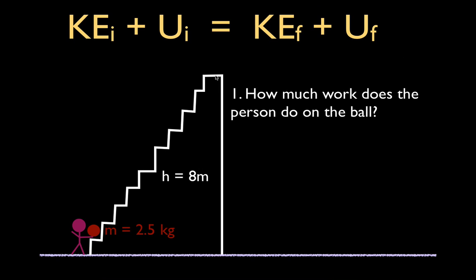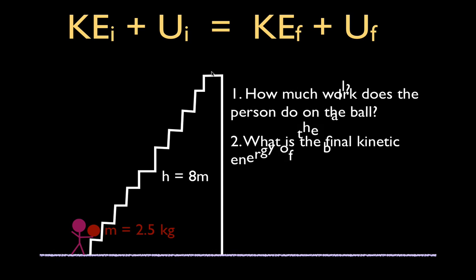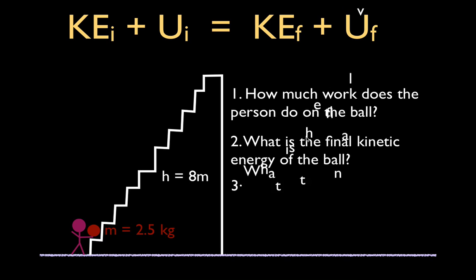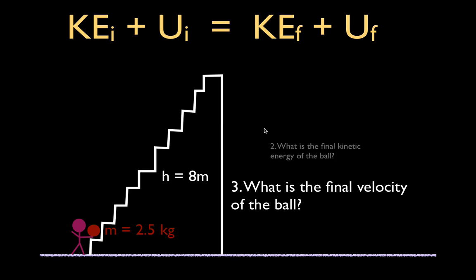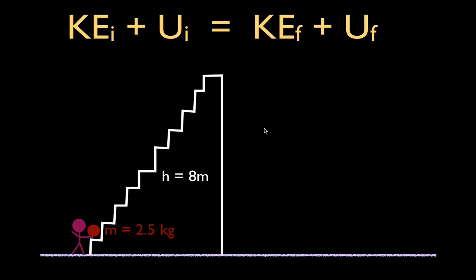We want to know how much work does the person do on the ball when they carry the ball from here up to the top of the stairs. We want to know once the ball is released — when they drop the ball straight down — what is going to be the final kinetic energy of the ball? And we are also going to figure out what is going to be the final velocity of the ball just before it reaches the ground surface. So those are the three questions: the work, the kinetic energy, and the final velocity.